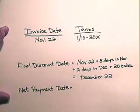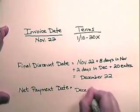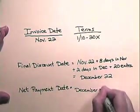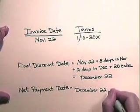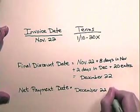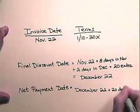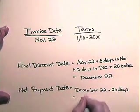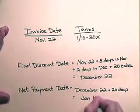The net payment date is always 20 days after the final discount date. So December 22nd plus 20 days gives us January 11th as the net payment date.